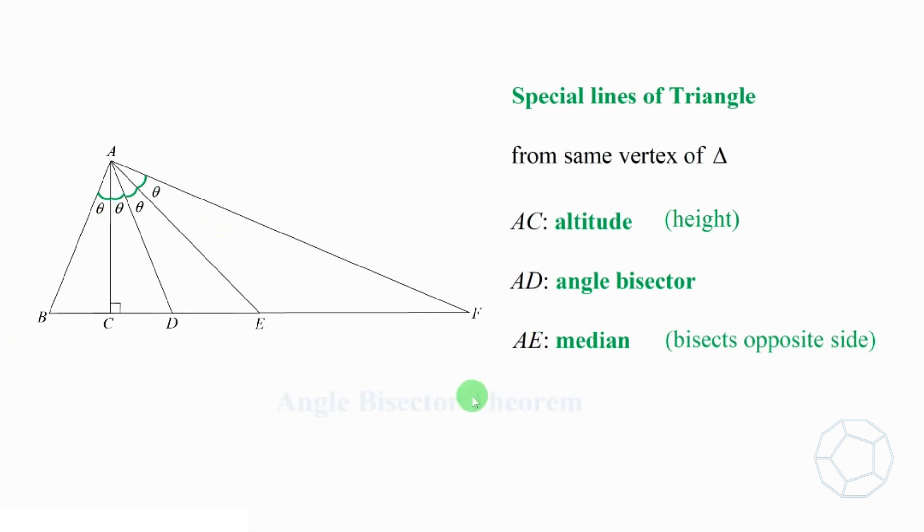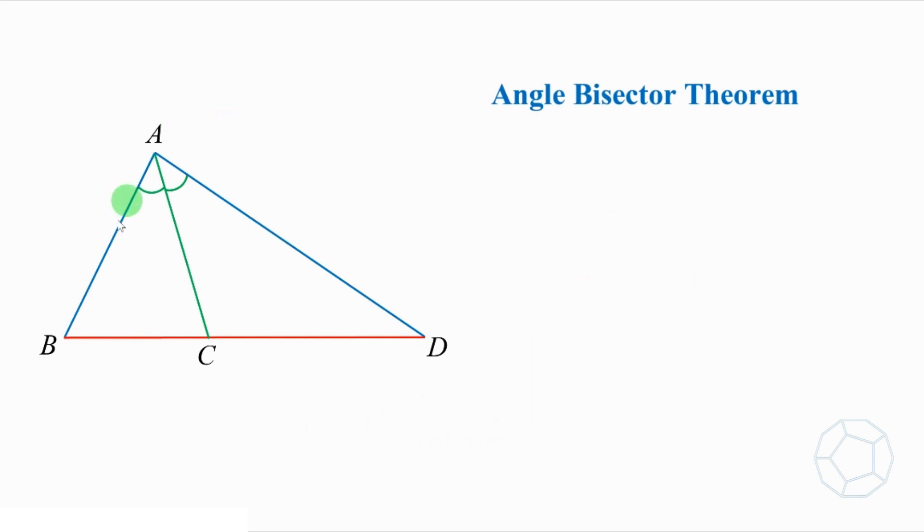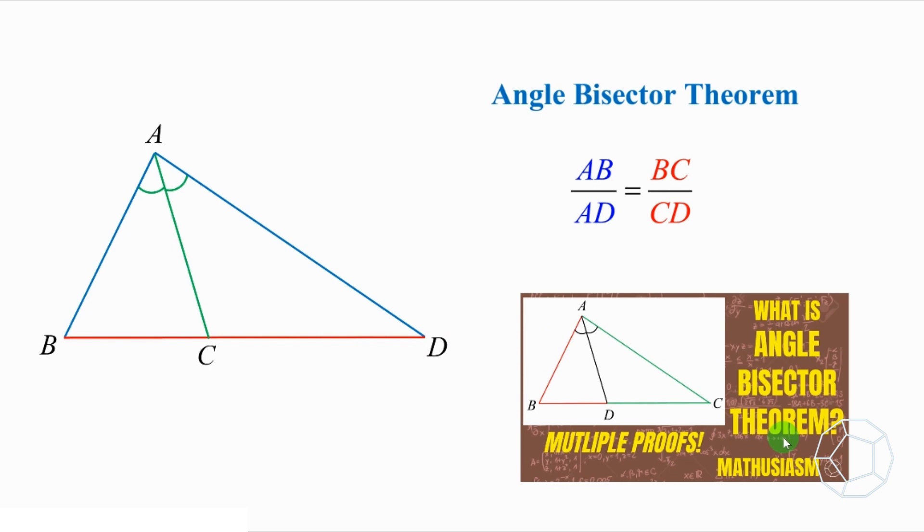We shall make use of the powerful angle bisector theorem. So what's the theorem about? In triangle ABD, C is the point on BD so that AC is the angle bisector of the angle at A. Then the ratio of the blue side AB over AD is equal to the ratio of the red side BC over CD. This theorem is proved by three different methods in another video. If you are interested, you may want to check out the link in the description.